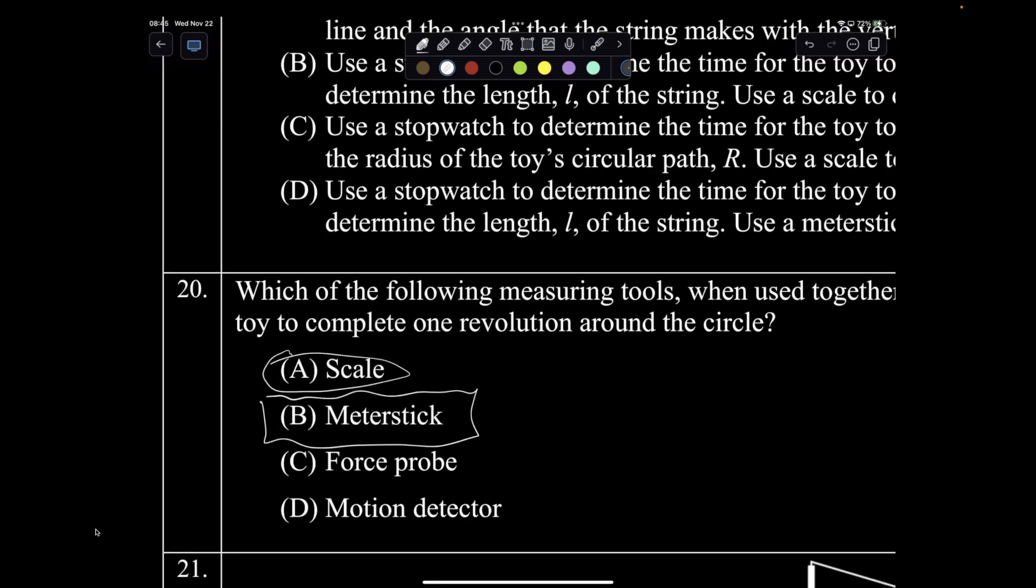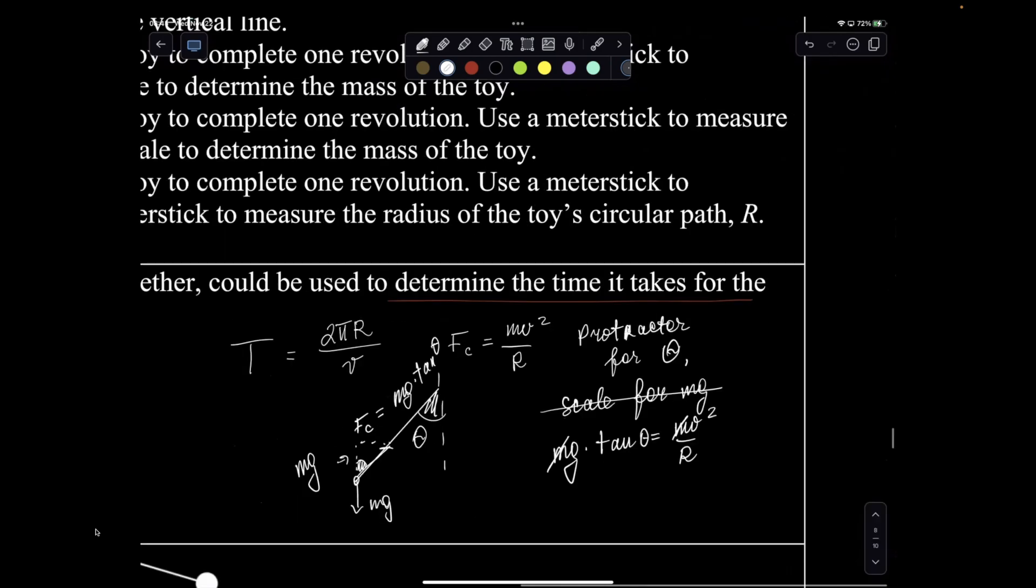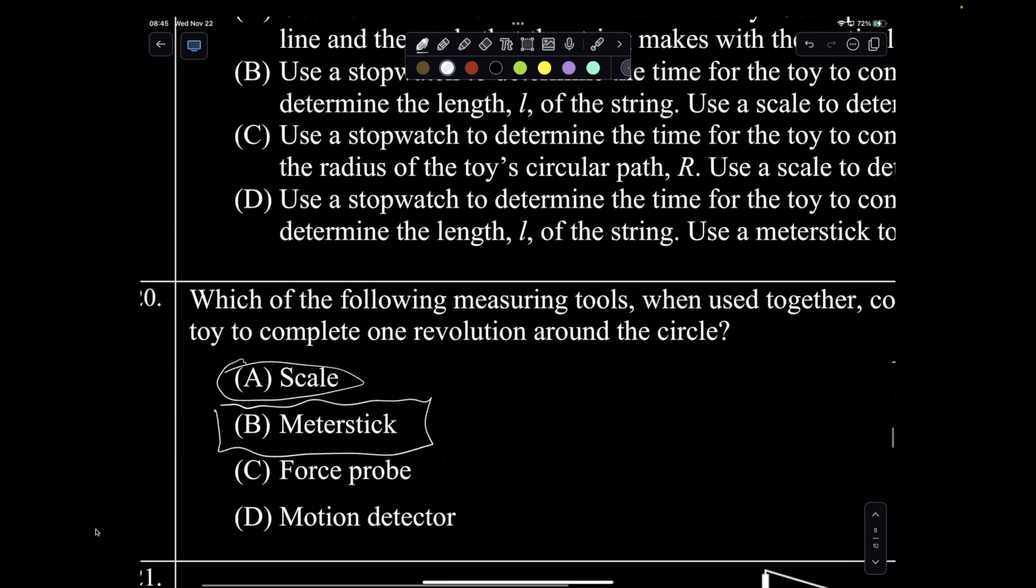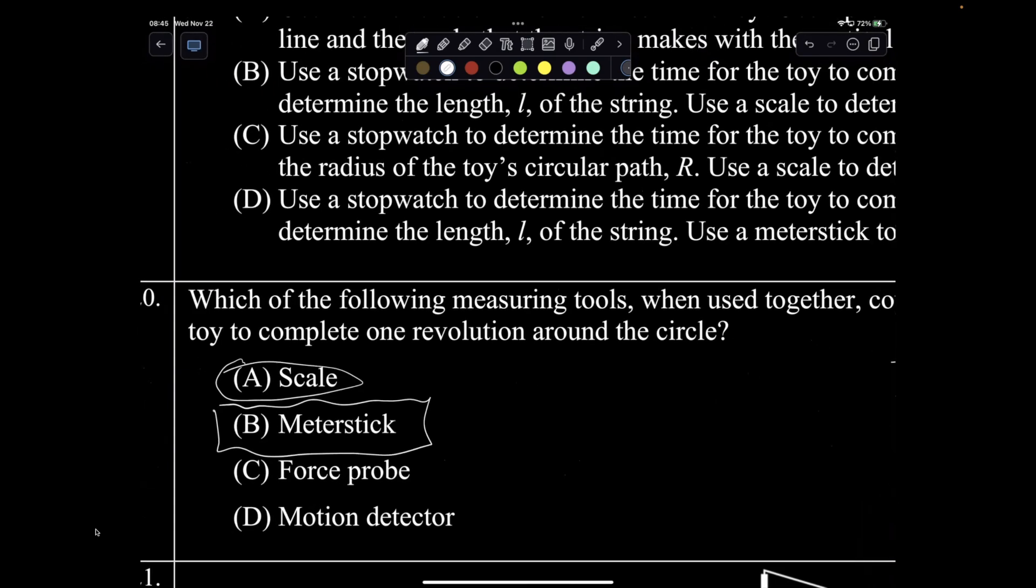Remember, in the actual lab, you didn't have anything other than meter stick, and you were still able to figure out the period for the one that they suggested. Right here, instead of scale, you also had the protractor, so you can say protractor and you can get the meter stick.